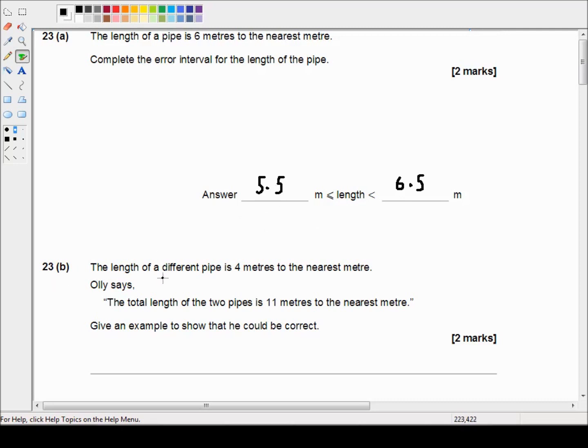23b says the length of a different pipe is four meters to the nearest meter. Ali says the total length of the two pipes is 11 meters to the nearest meter. Give an example to show that he could be correct.